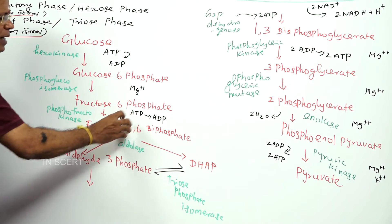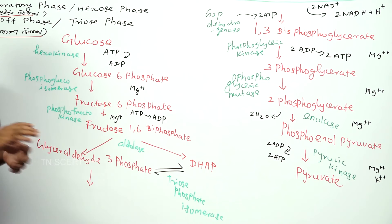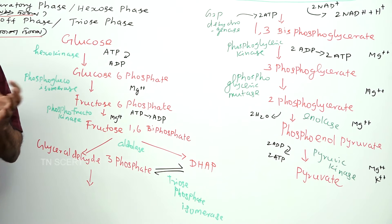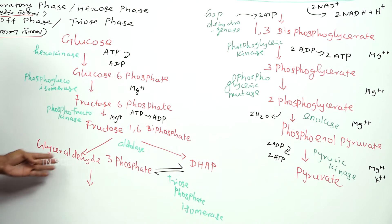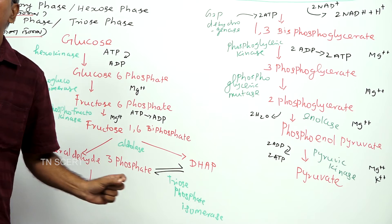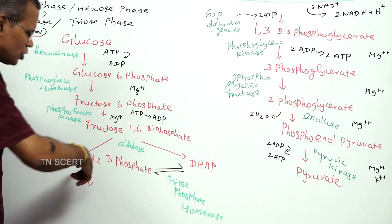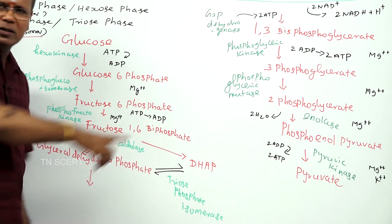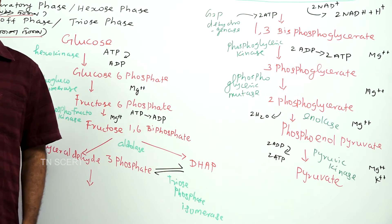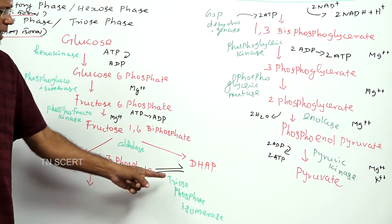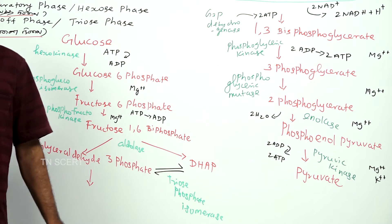Fructose 1,6-bisphosphate splits to form two compounds: glyceraldehyde 3-phosphate and dihydroxyacetone phosphate. These two chemicals are isomers of each other, and they are interconverted by the enzyme triose-phosphate isomerase.